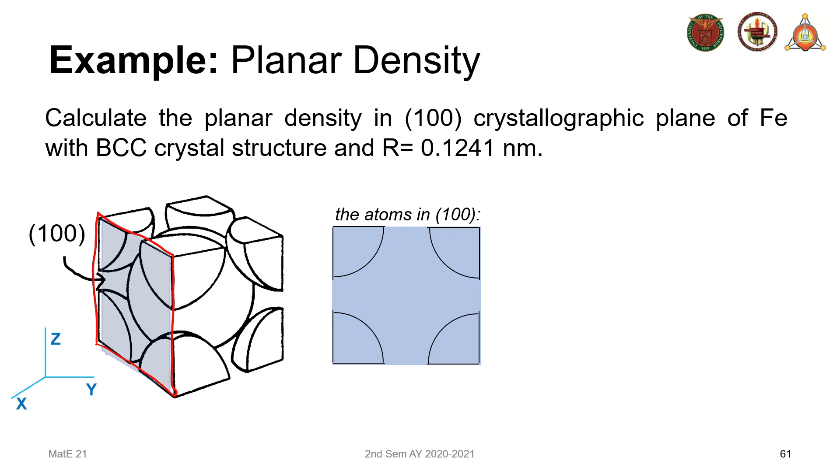And for the plane, you can see that there are 1, 2, 3, 4 atoms, but they're in the corner. And we will see that the contribution of each atom will be 1/4. So there will be 1/4 of an atom in this plane, 1/4 of an atom in this plane, 1/4 times 1/4. Hence, we will have a number of atoms equal to 1.